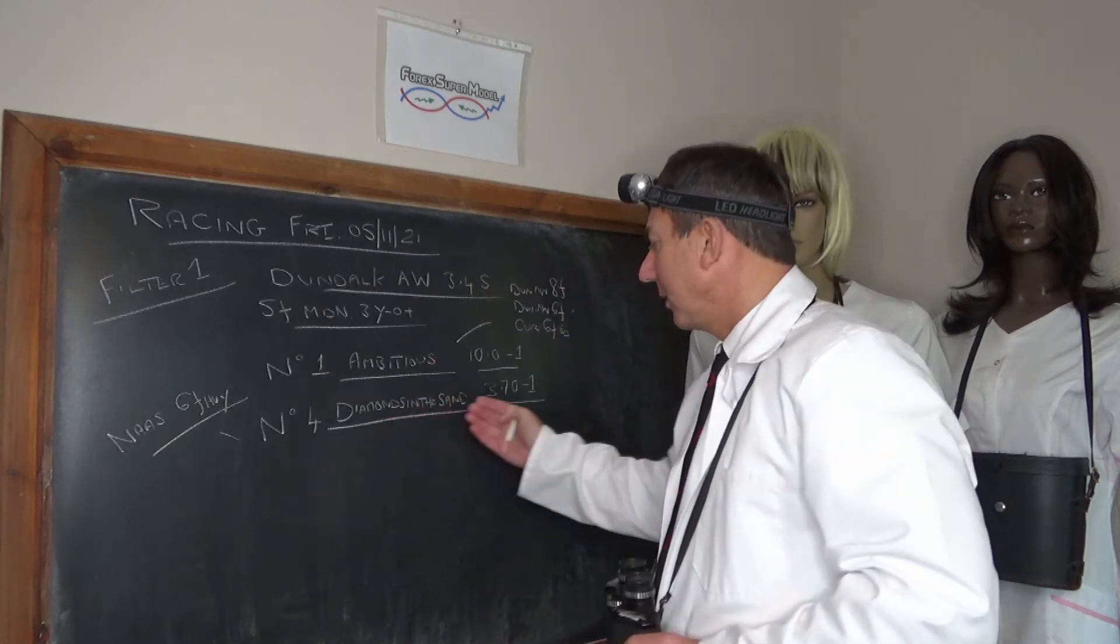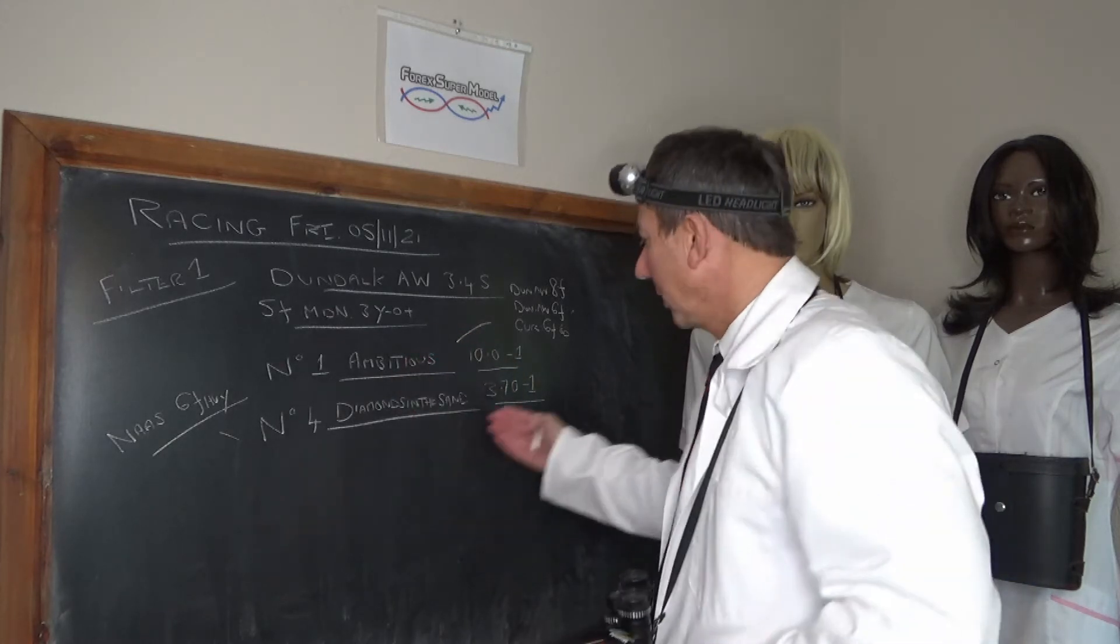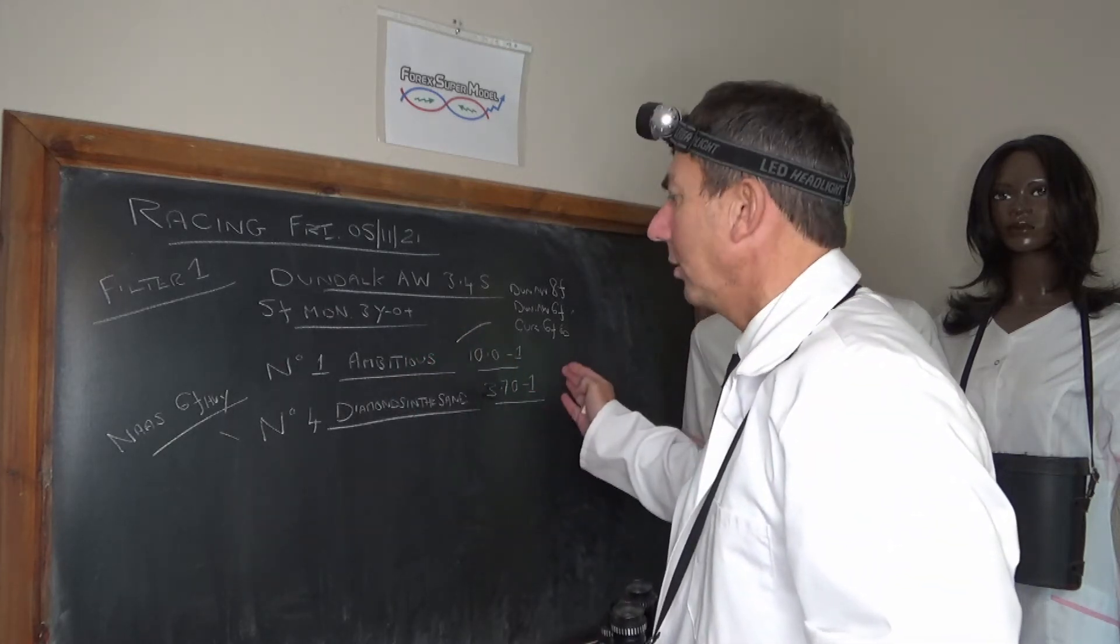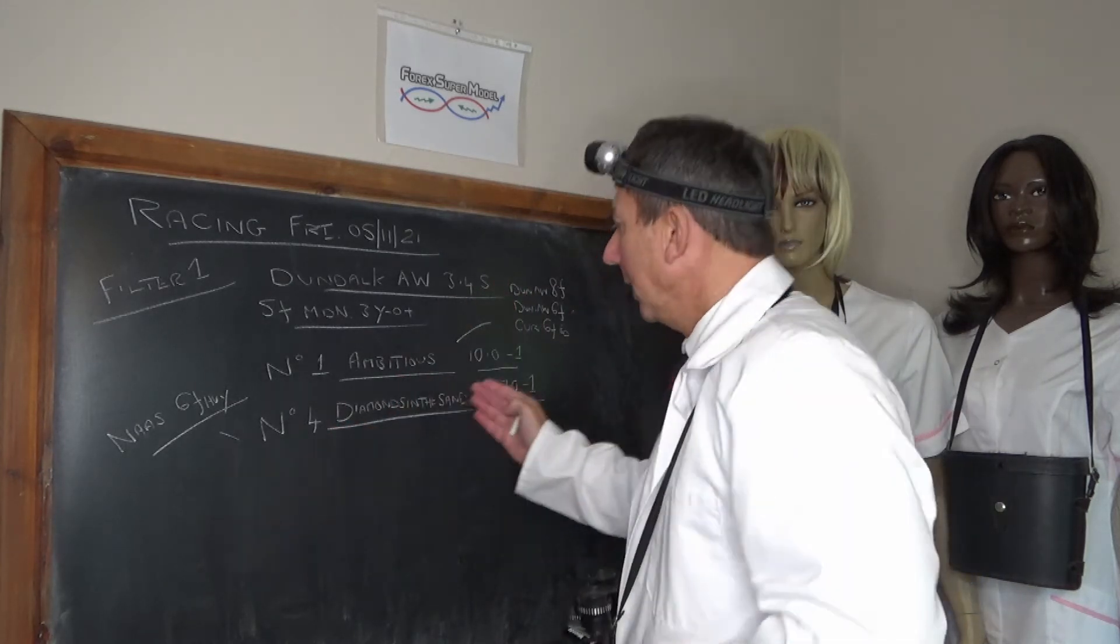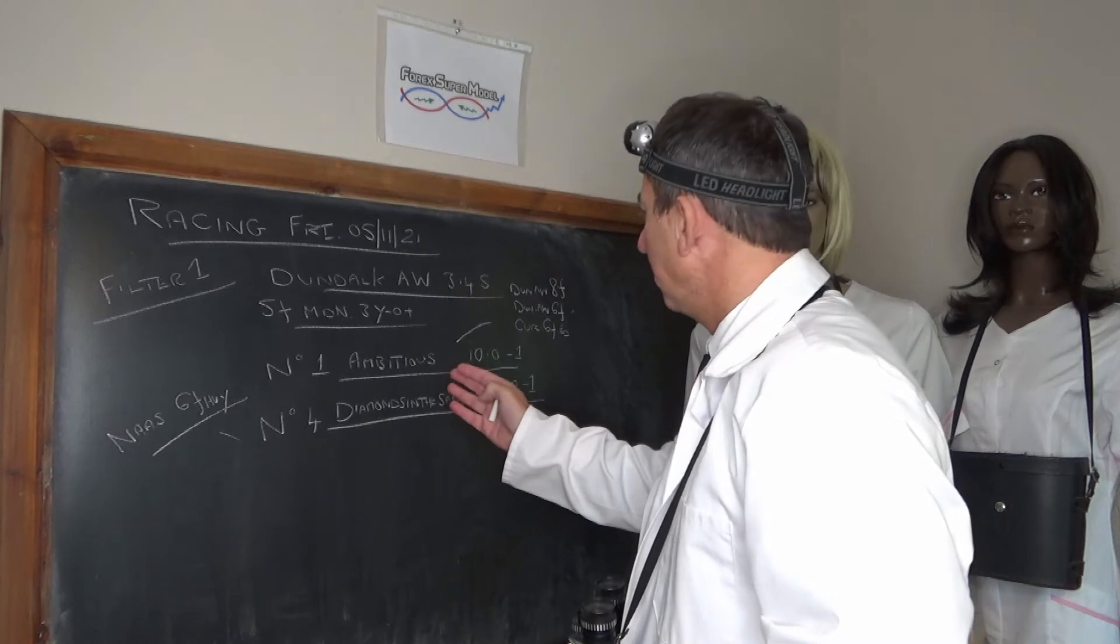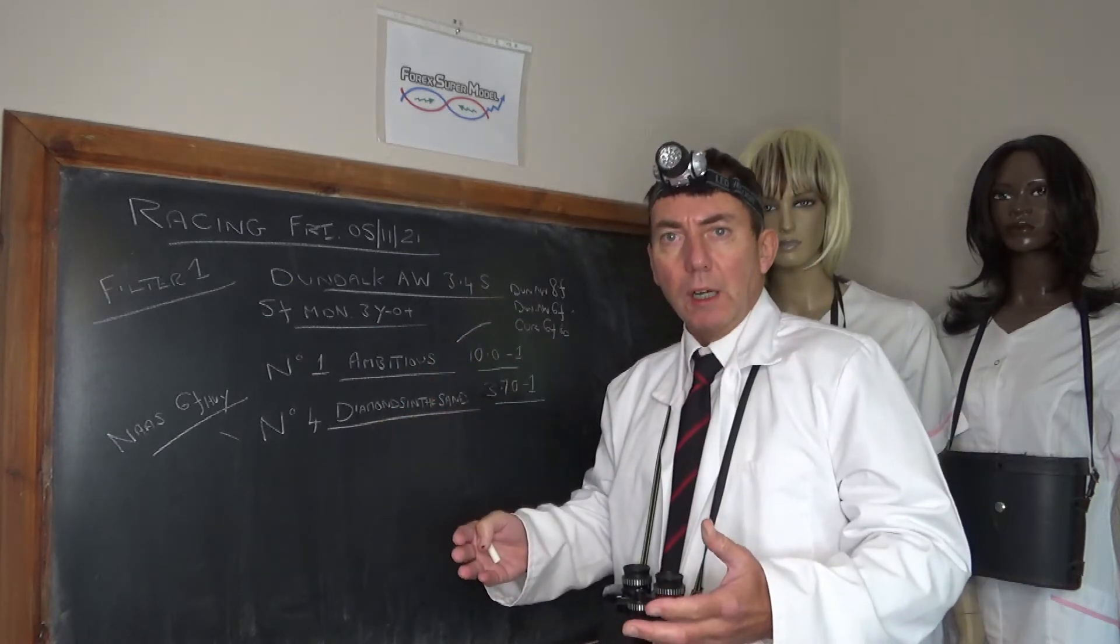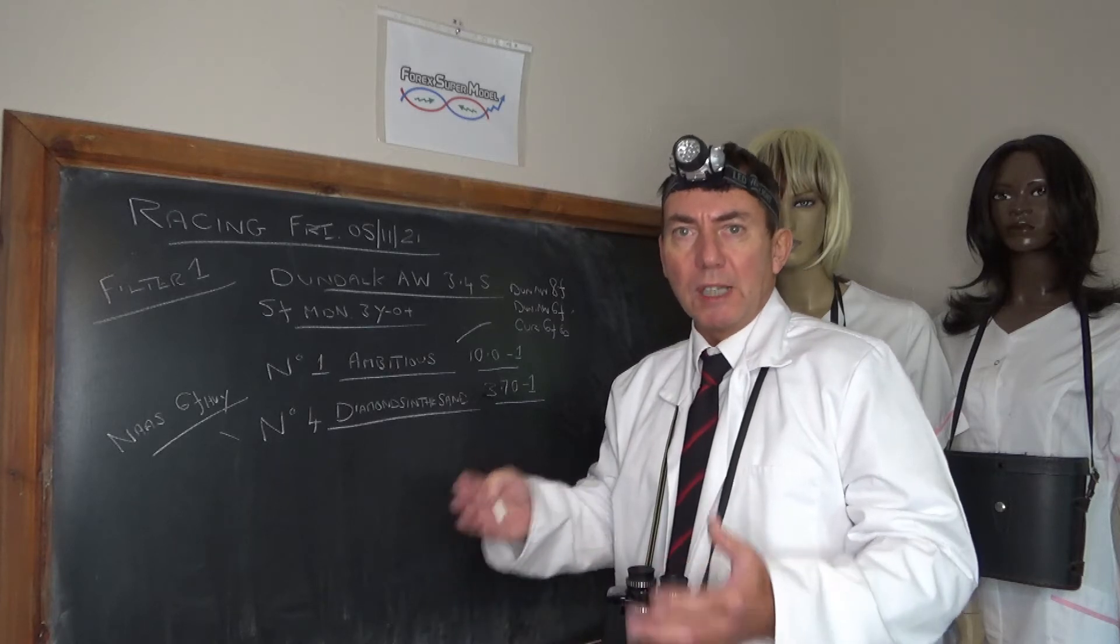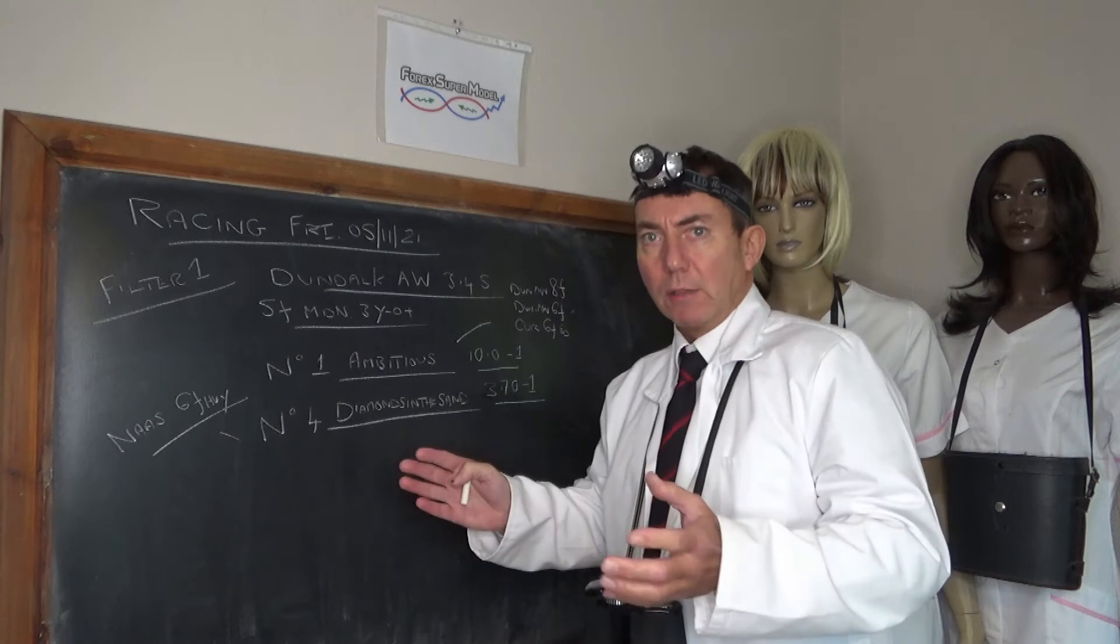And number four, Diamonds in the Sand, it's about 100 to 30 on the accounts, but we've got an average of 3.70 to one. So we're betting both those to win in the race. If you look at Ambitious, number one, it's had three runs. This is its first run with potentially a handicap rating, but this is a maiden so it doesn't come through in that respect.